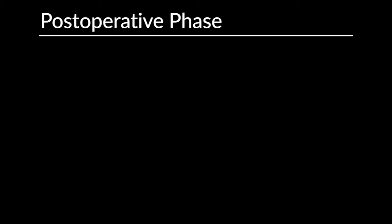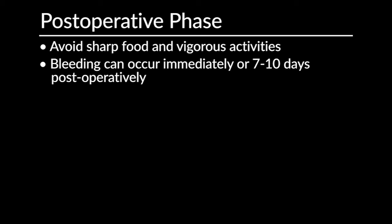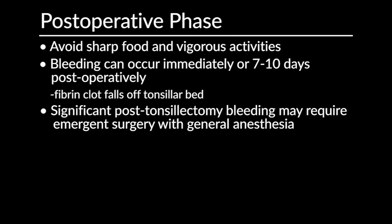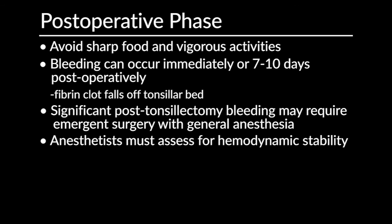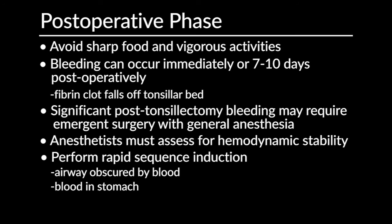Before discharge, patients should be cautioned to avoid sharp foods and vigorous activity, because post-tonsillectomy bleeding can occur either immediately or seven to ten days postoperatively, as the fibrin clot falls off the tonsillar bed at that time. With post-tonsillectomy bleeding, significant amounts of bleeding can occur and may require emergent surgical intervention under general anesthesia. For the anesthetist, this means assessing the patient for hemodynamic stability, as these patients can be hypotensive or even in shock, and performing a rapid sequence induction with the airway possibly obscured by blood and a lot of blood possibly in the stomach. These can be pretty critical patients.